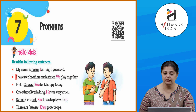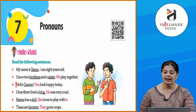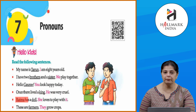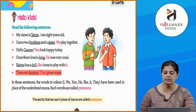Years old. I have two brothers and a sister. We play together. You look happy today. Once there lived a king — he was very cruel. Raima has a doll; she loves to play with it. These are farmers; they grow crops.